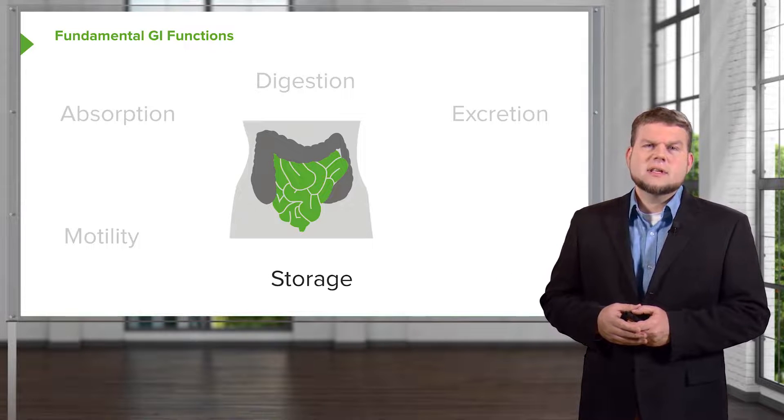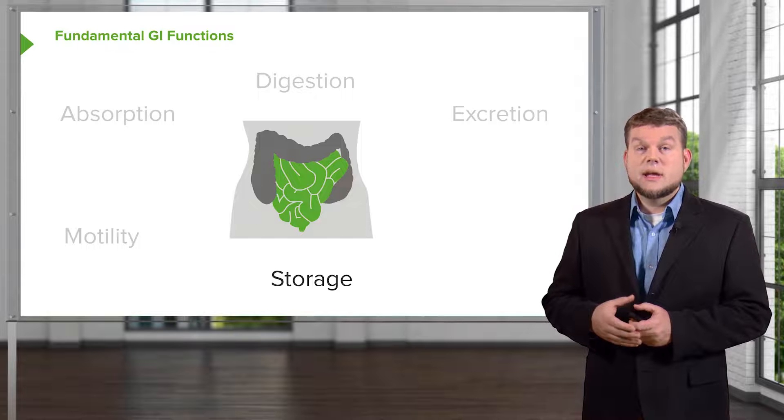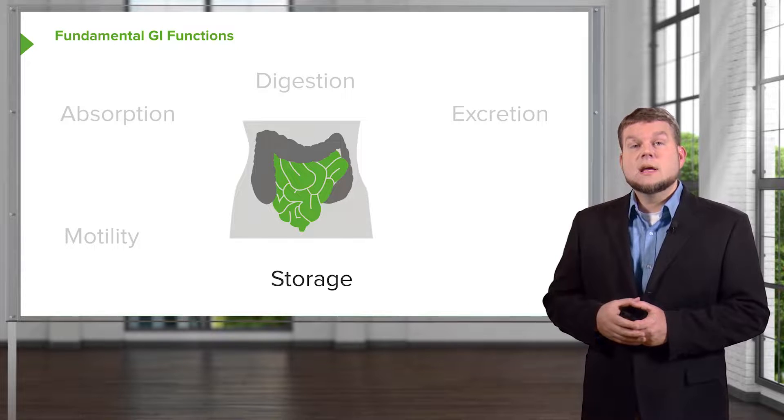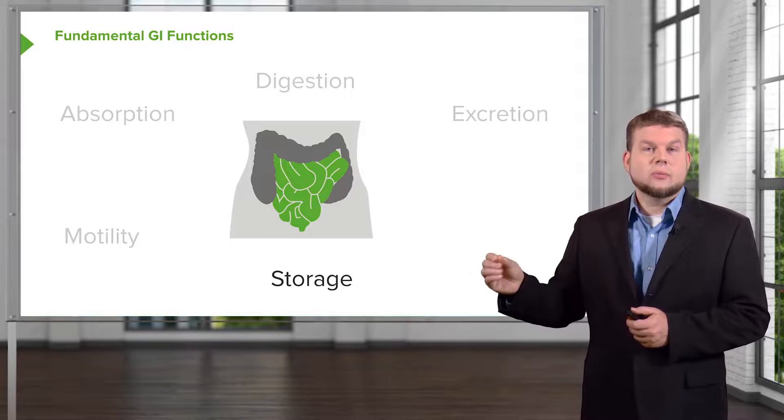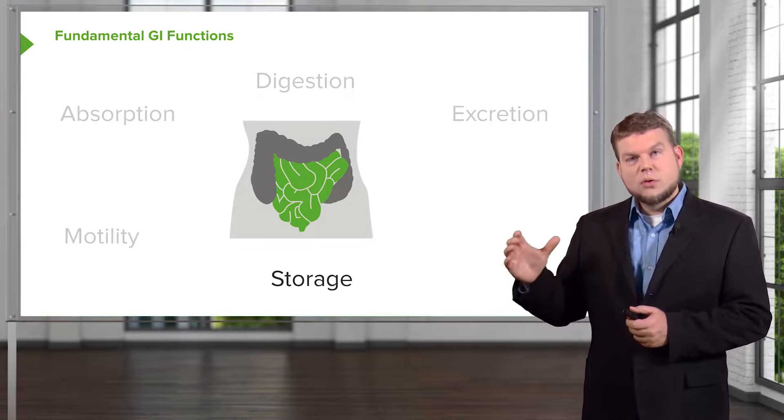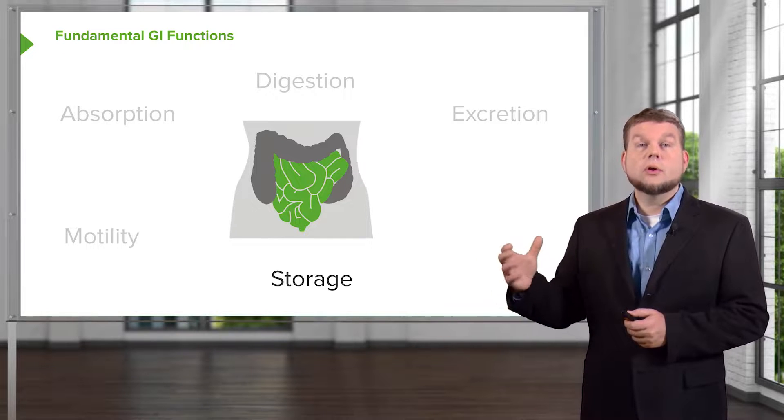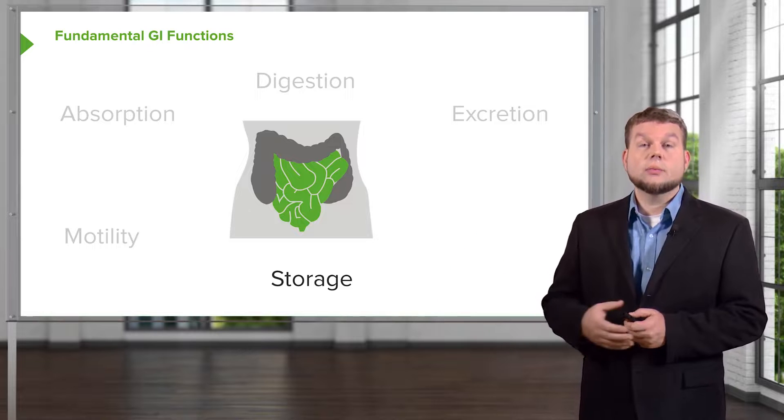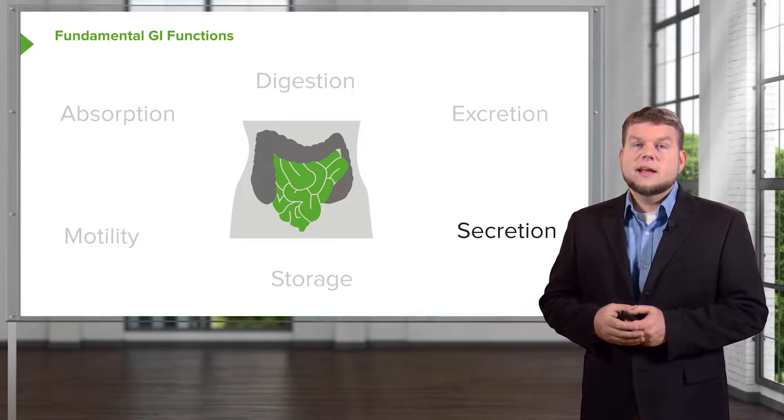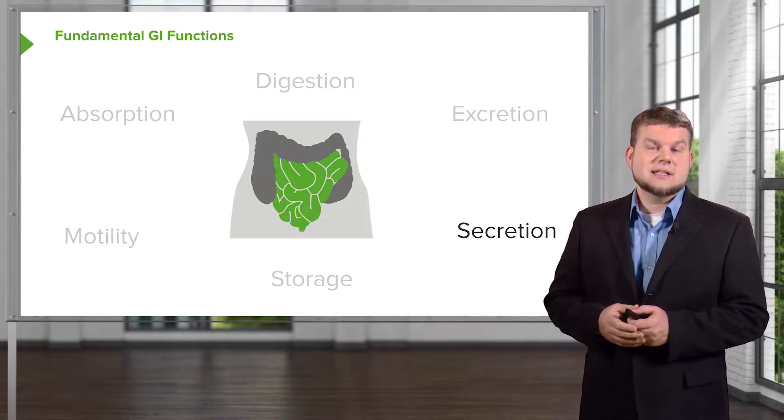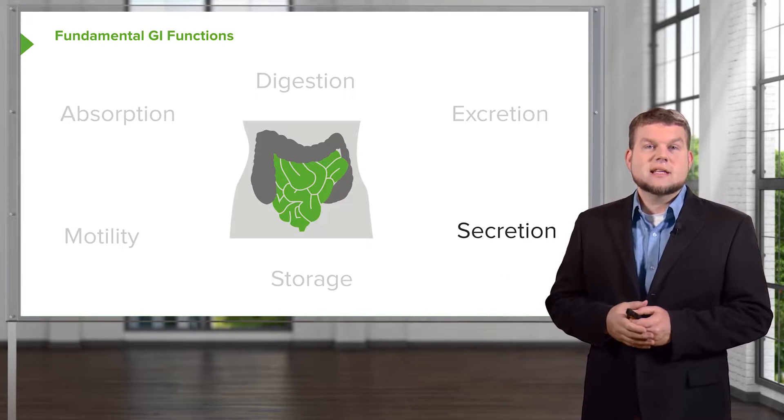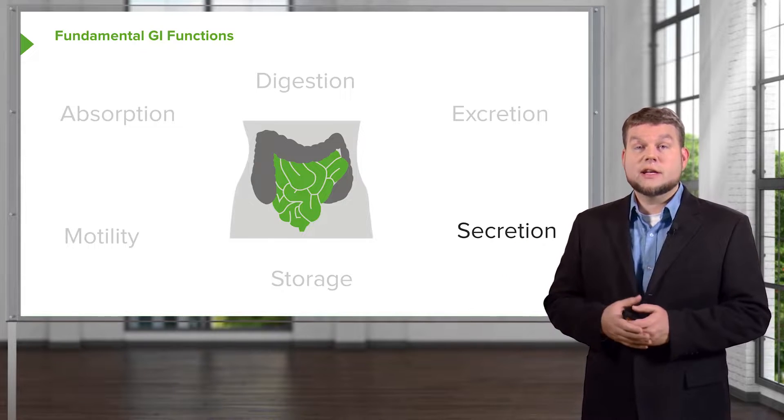Some parts of the gastrointestinal system's main job is to store things, because you need to deliver the particular food stuff to the right place at the right time. Sometimes you need to hold it for a certain period of time before you open one of the sphincters to let it go through. And finally, to undergo digestion, the body is going to have to put in a number of substances into the intestinal lumen to be able to undergo digestion.